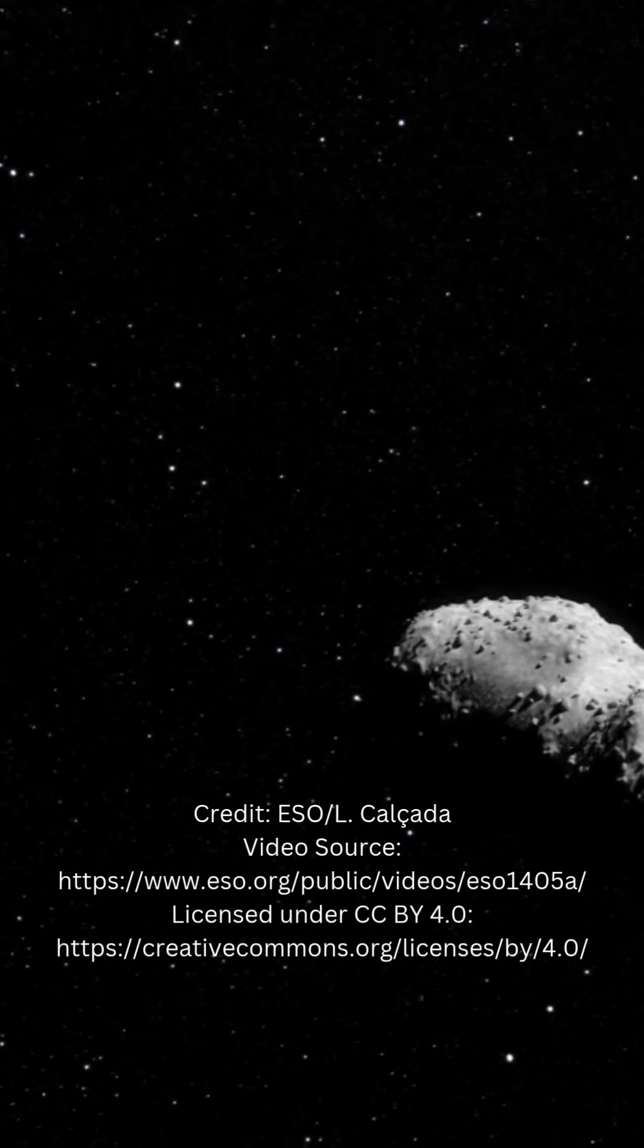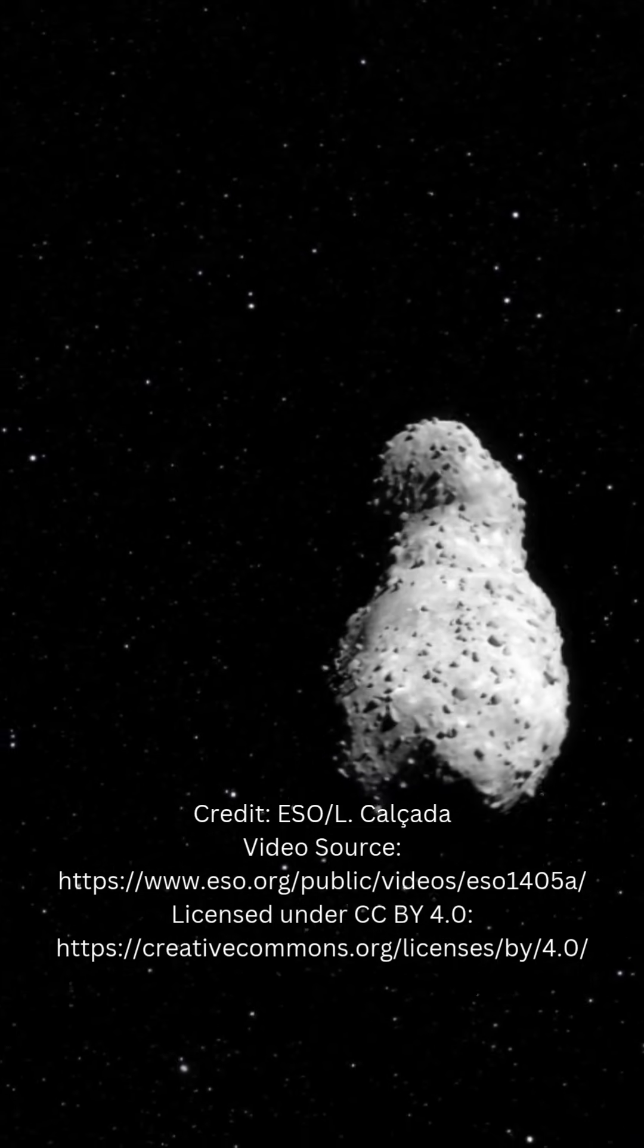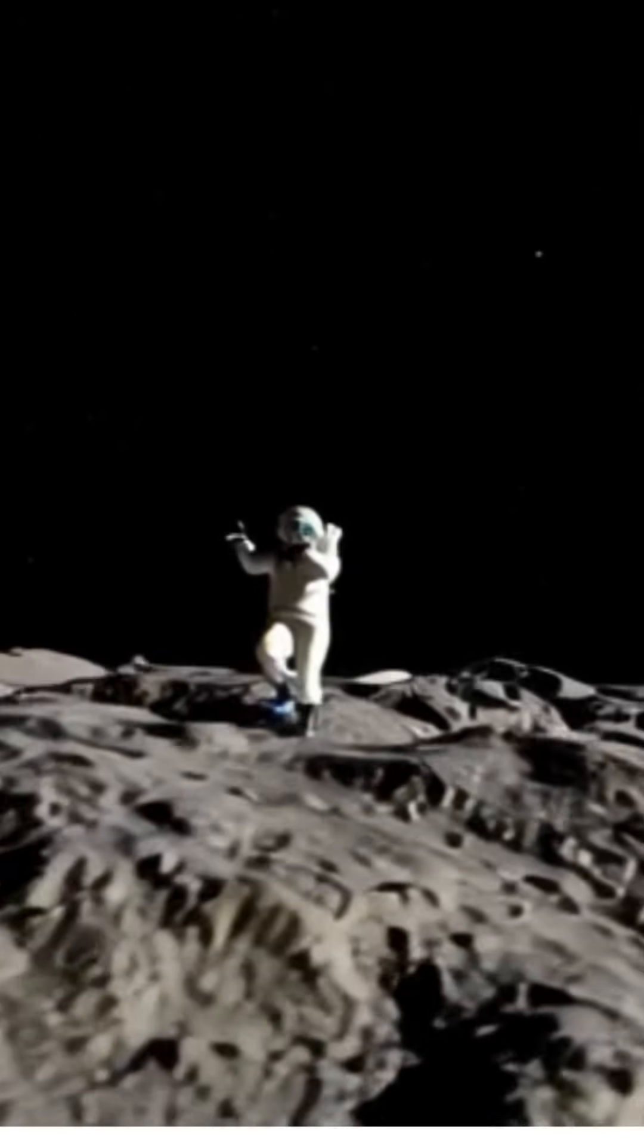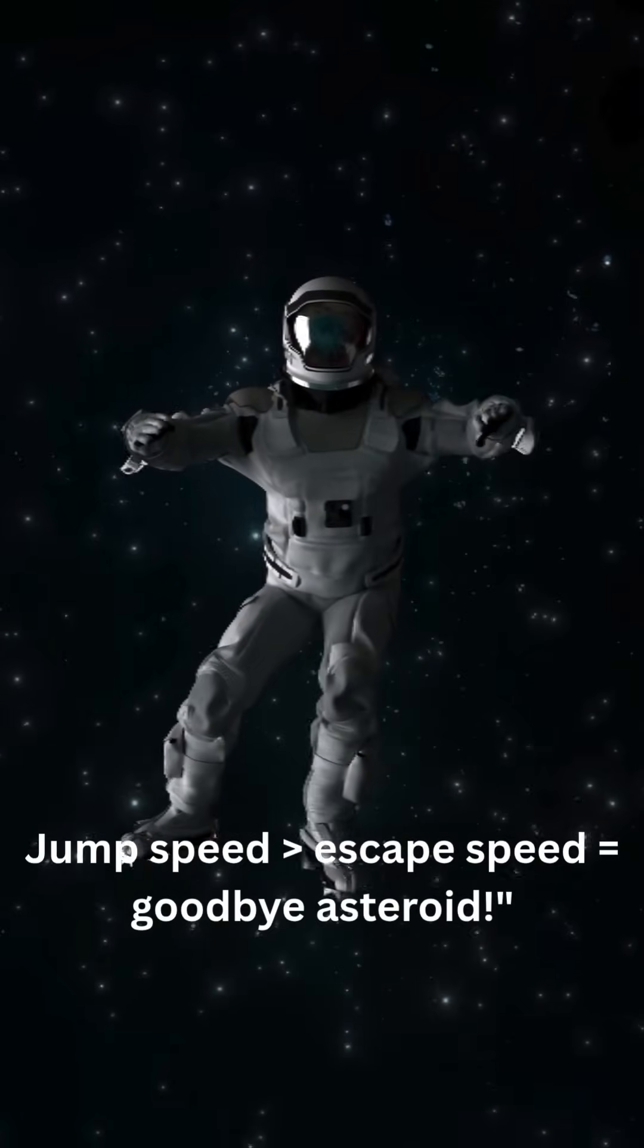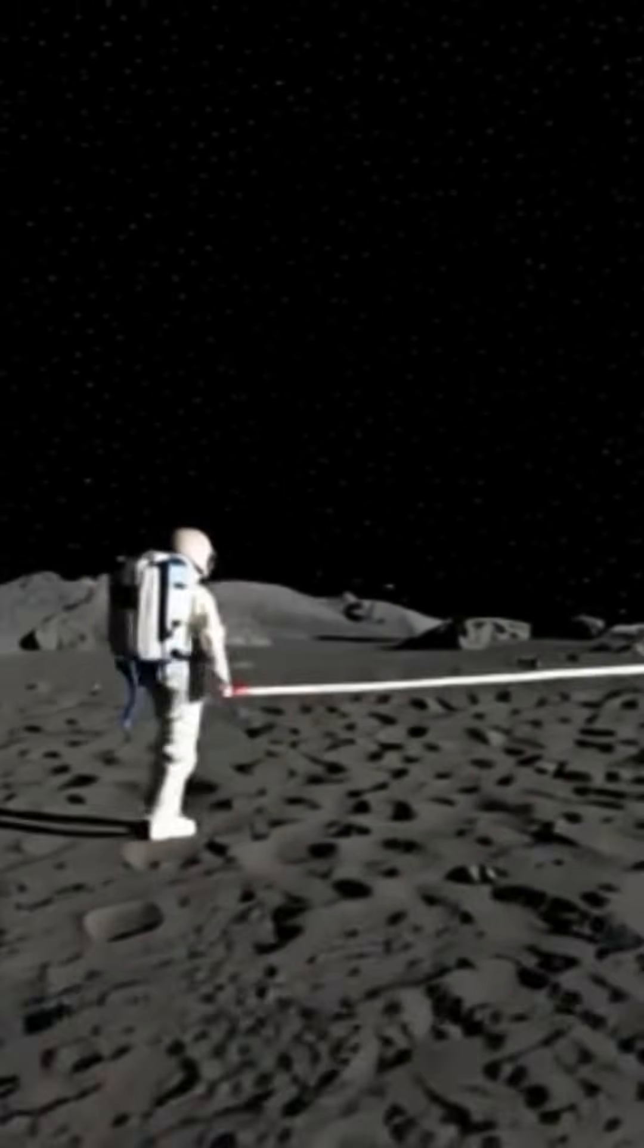Let's take Otakawa, a real asteroid about 500 meters long. Its gravity is 60,000 times weaker than Earth's. That means you could literally jump at normal strength and never come back. Astronauts must anchor themselves for this reason.